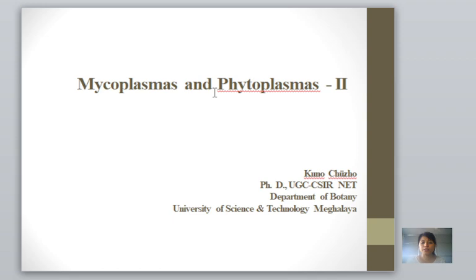Today we will be discussing phytoplasmas. One more thing: phytoplasmas and mycoplasmas are genus names but are also used as trivial names. In general, they are called mycoplasmas and phytoplasmas without italics because they are most commonly used in a trivial manner. However, when you write the scientific name of a mycoplasma or phytoplasma species, it must always be written in italics.